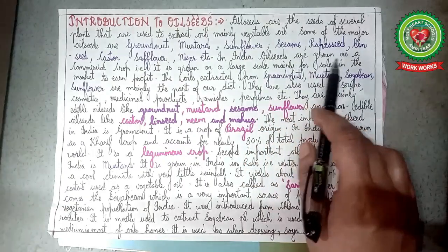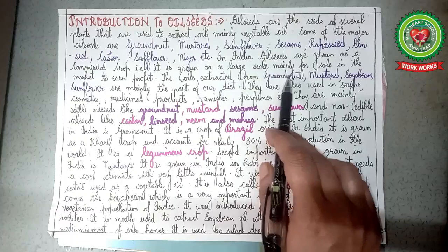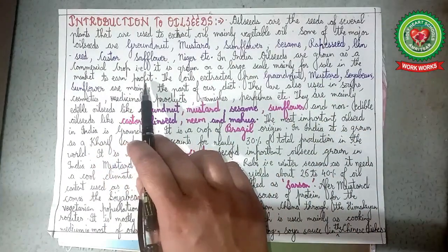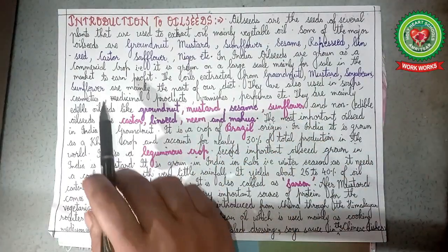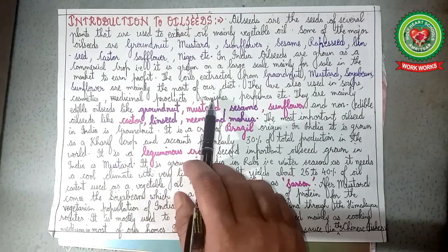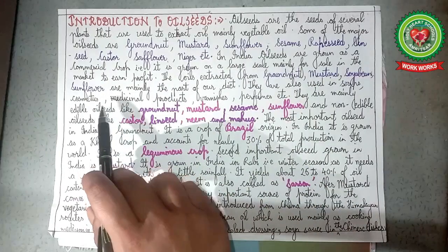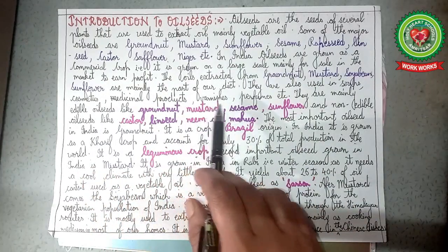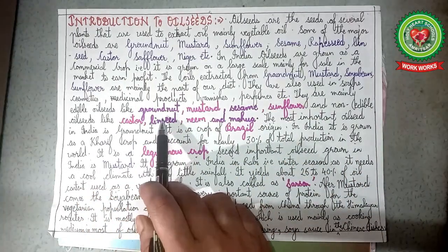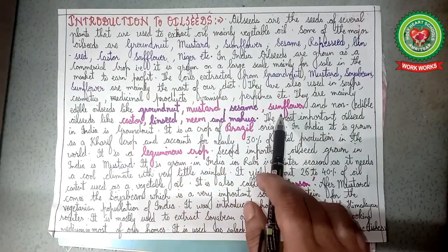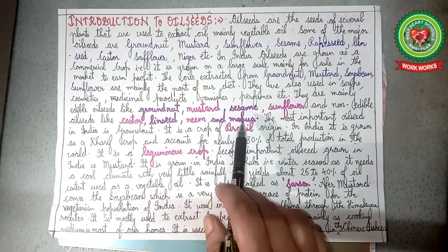In India, oilseeds are grown as a commercial crop, that is, grown on a large scale mainly for sale in the market to earn profit. The oils extracted from groundnut, mustard, soyabean, and sunflower are mainly part of our diet. They are also used in soaps, cosmetics, medicinal products, varnishes, perfumes, etc. There are mainly edible oilseeds like groundnut, mustard, sesame, sunflower, and non-edible oilseeds like castor, linseed, neem, and mahua.